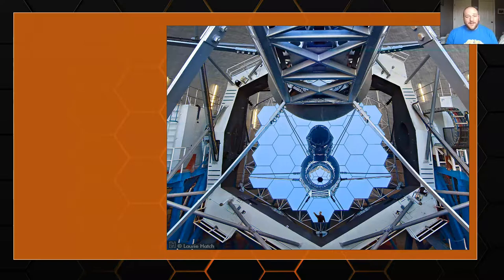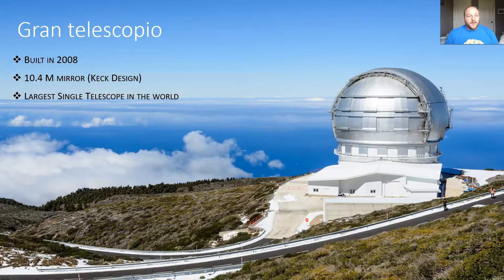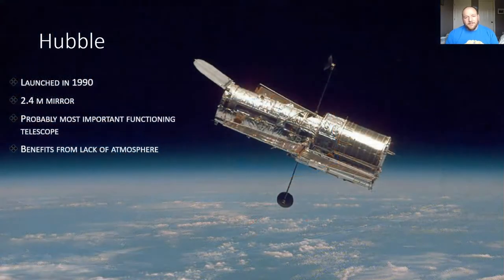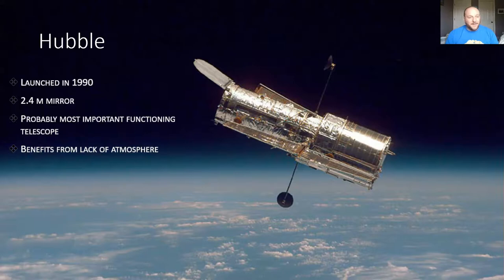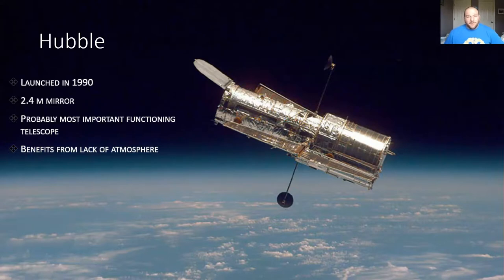Keck is probably the most famous telescope you haven't heard of. The Gran Telescopio in Spain is actually a little bit bigger and more modern in many ways. Finally, probably the one telescope you have heard of is the Hubble. Hubble is amazingly powerful not because of the size of its mirror — it's only 2.4 meters. Its huge advantage is it's in space, which allows it to avoid the Earth's atmosphere and light pollution. It was actually out of focus when launched, and they had to send a shuttle crew up to fix it, but ever since it's sent back incredible images and is probably the most important functioning telescope ever built.